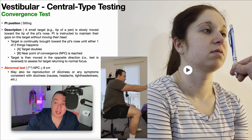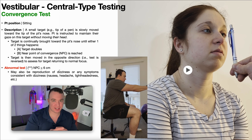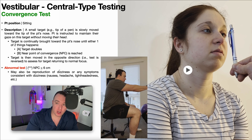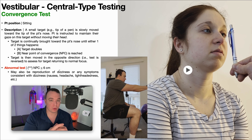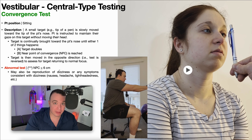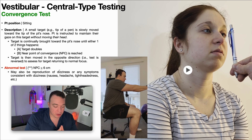The distance between the eyes and the target — that near point of convergence — if it is less than six centimeters, that is considered normal. When the near point of convergence is greater than six centimeters, that is an abnormal finding, and that particular finding is very specific for a central vestibular deficit. You can be pretty confident that that's what you're dealing with.